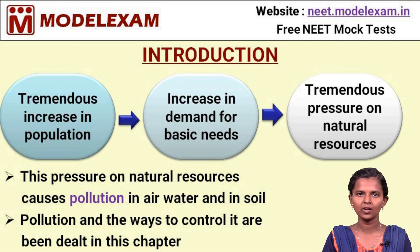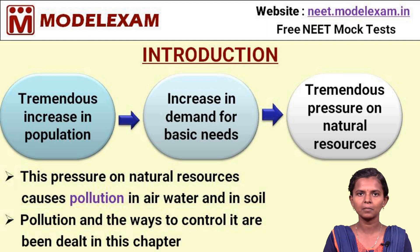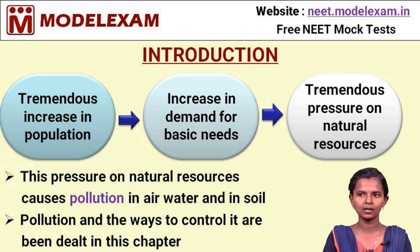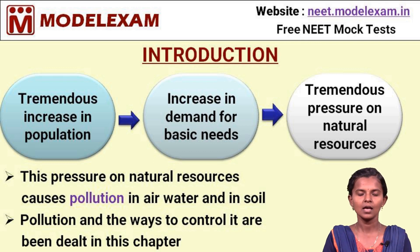Introduction. This chapter is on environmental issues. What we are going to deal with in this chapter is about pollution. Before that, we have to know why this pollution is caused. There is a tremendous increase in population in the country, and this increase leads to an increase in demand for basic needs like food, water, etc. This increase in demand causes tremendous pressure on natural resources, which causes pollution in air, water, soil and other natural resources. Pollution and the ways to control it are dealt with in this chapter.